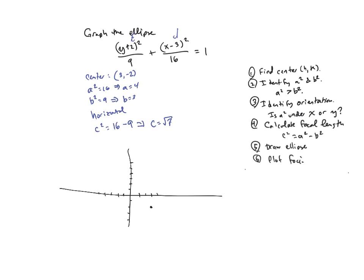And then I'm going to count out my major and minor radii in the appropriate directions. So my major radius was 4 and it's going in the x direction. So I'm going to count out 4 left and right from the center. 1, 2, 3, 4. 1, 2, 3, 4. And then my minor radius is 3 and it's coming out in the y direction. So I'm going to count up 2, 3 and down 2, 3.